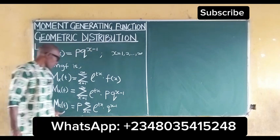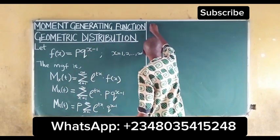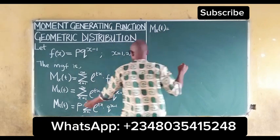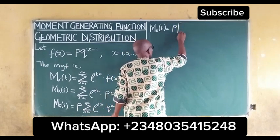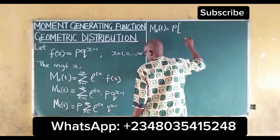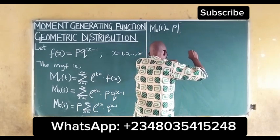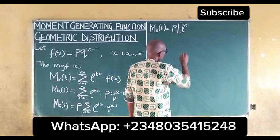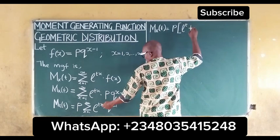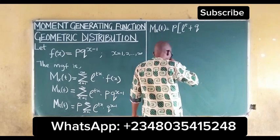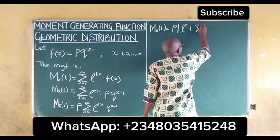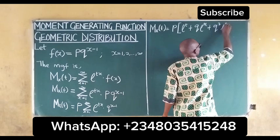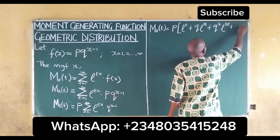Moving over to the other side, we can write the moment generating function as p times the expanded series: e^t plus q·e^(2t) plus q²·e^(3t), and it continues that way.